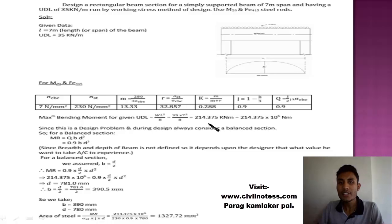For a balanced section, moment of resistance is given by Q into bd square. We are placing this value q of 0.9 into bd square. Since breadth and depth of the beam is not defined, it depends upon the designer what value to take based on experience. Yes, definitely, because you have to take one value and it depends upon the experience. In examination we can write this, but during the main design portion this is one of the main design problems.